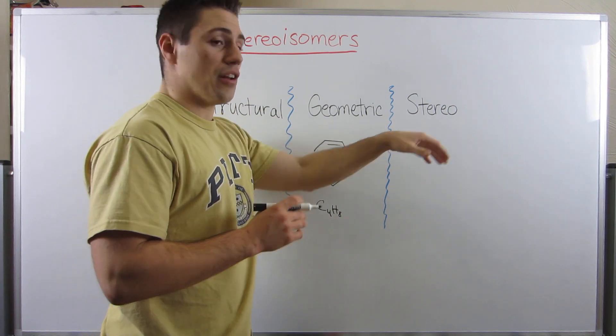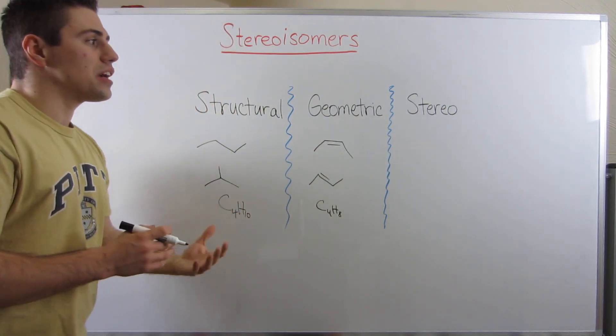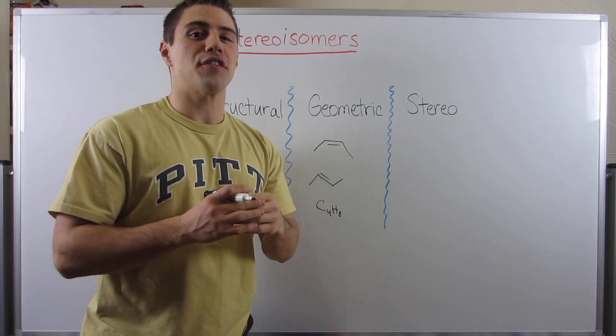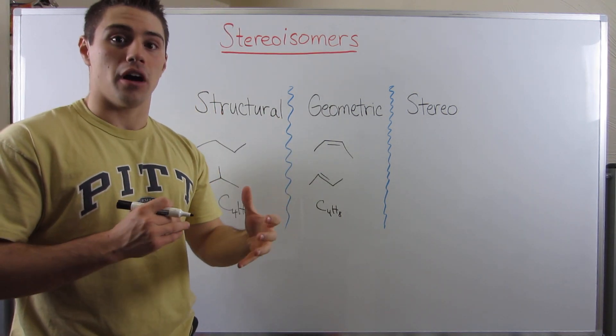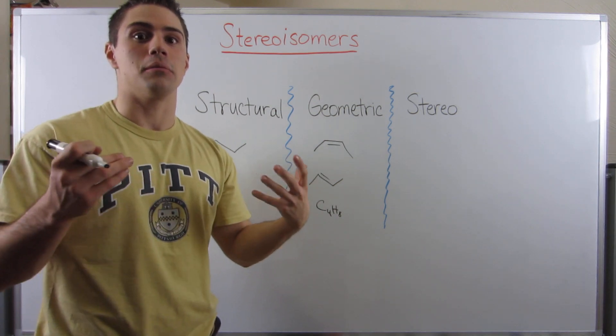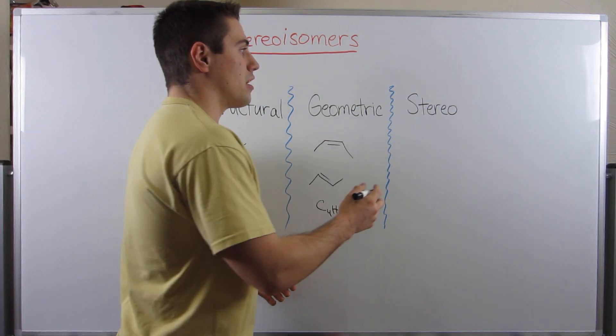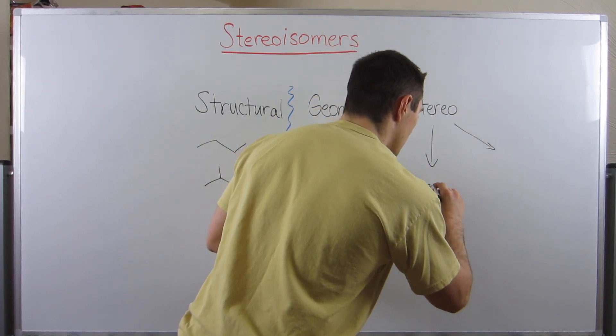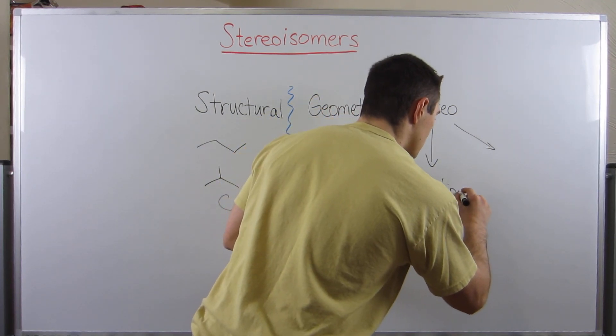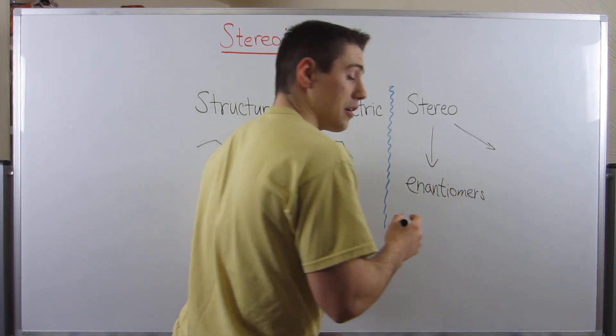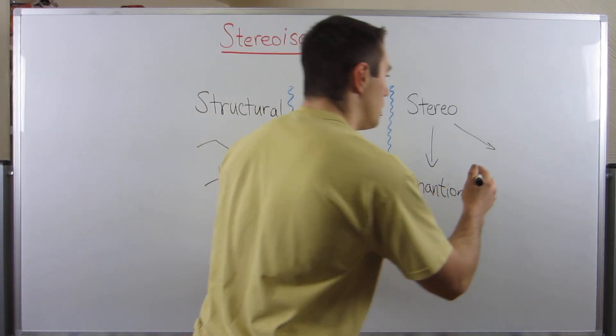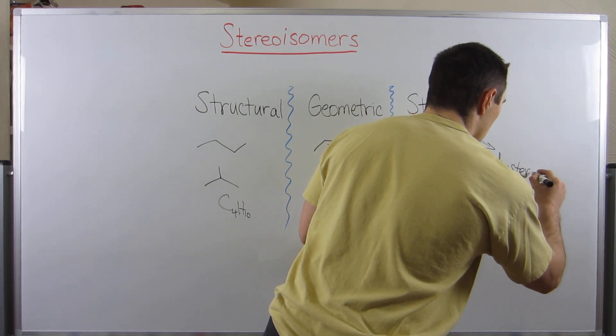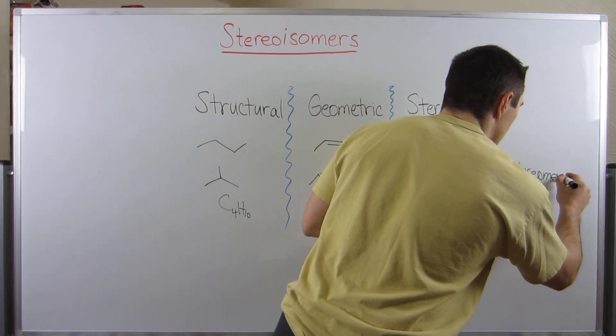Now I can actually elaborate on what they are. Stereoisomers are the same molecule structurally, but they differ in the configurations of the various stereocenters in the molecule. There are really two types of stereoisomers: enantiomers and diastereomers.